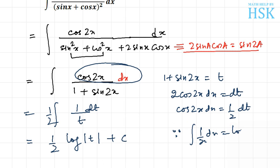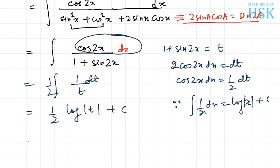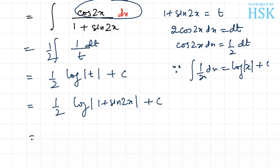Now I'm going to replace t with 1 plus sine 2x. I'm going to further replace 1 plus sine 2x by the term from which this expression came, that is sine x plus cos x whole square, plus c.